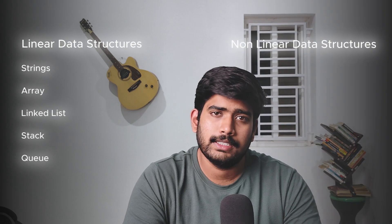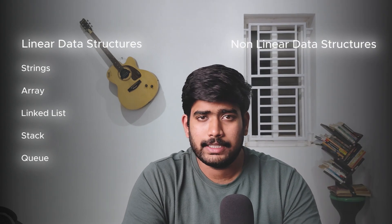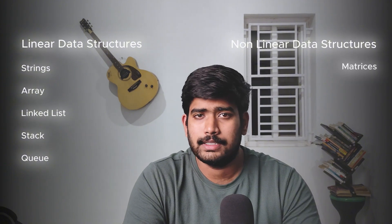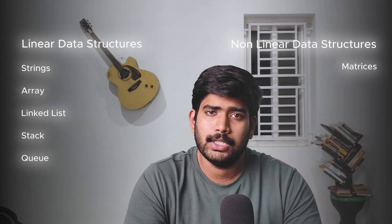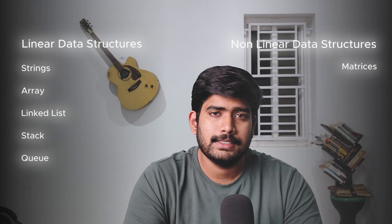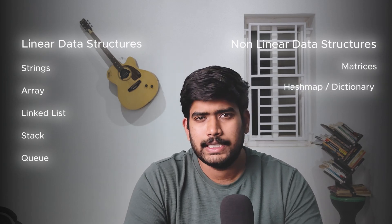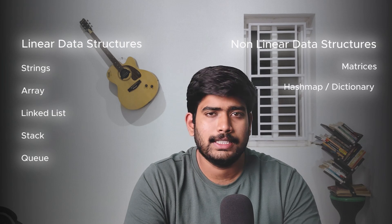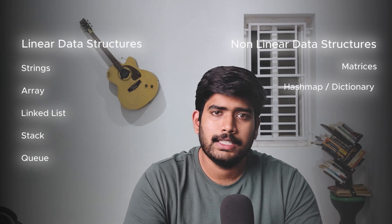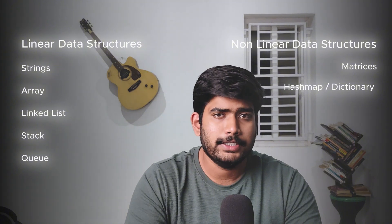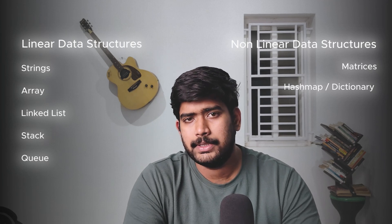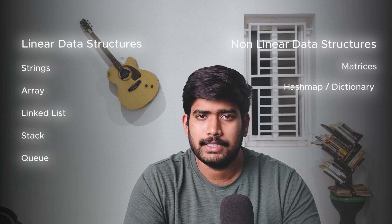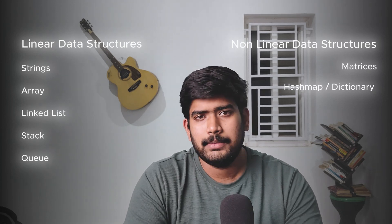Non-linear data structures are not sequential — data can go in multiple directions. For example, a matrix is a non-linear data structure, which is an array of arrays — you can go left, right, up, or down, so it's non-sequential. Hash maps are also non-linear; in Python, it's called a dictionary. A dictionary stores key-value pairs, and a nested dictionary is also a non-linear data structure.